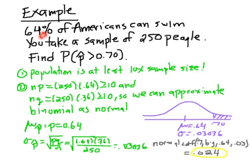So, 64% of Americans can swim. This 64% is a p — this is the population proportion. You take a sample of 250 people, so n would be 250. Find the probability that p-hat, the sample proportion — in other words, out of these 250 people — is greater than 70%. There are two rules of thumb to check. One is that the population is at least 10 times the sample size. Your sample size is 250, your population is the entire United States, clearly more than 250 times 10. Then, recalling chapter 8, we can approximate the binomial distribution as a normal distribution when n times p and n times q are greater than or equal to 10. I make that check, and sure enough they are, so now we can approximate the binomial distribution as normal. Now I calculate the mean of all p-hats and the standard deviation of all p-hats.